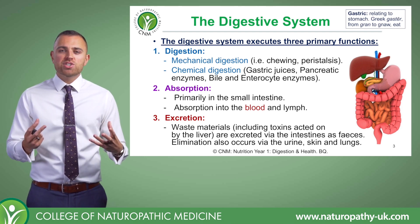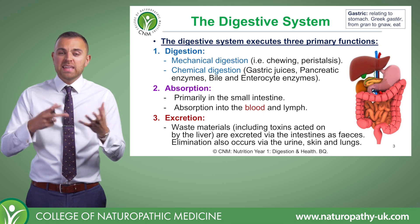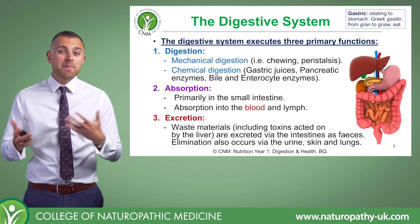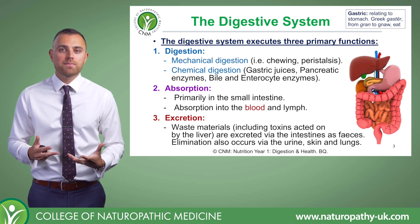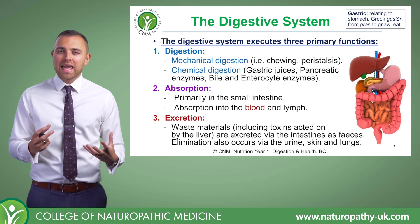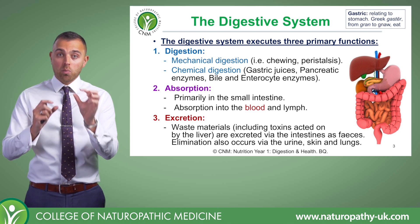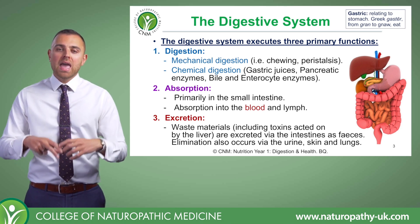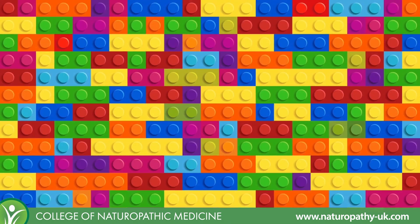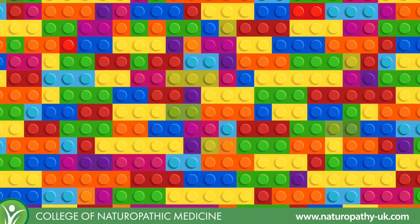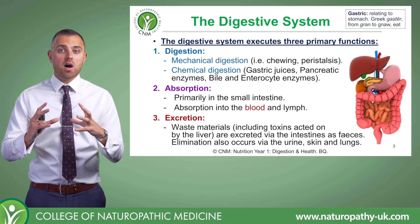A starch is a carbohydrate that is basically binding together anywhere between about three and five hundred glucose units. If you think of this a little bit like Lego, one glucose unit is a bit like one single brick of Lego, and a starch molecule has anywhere between about three to five hundred Lego bricks — when we join them all together we end up with this big structure of starch.